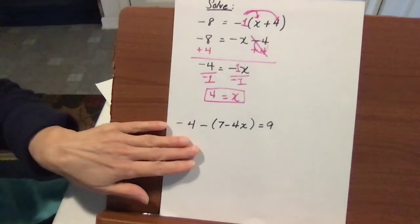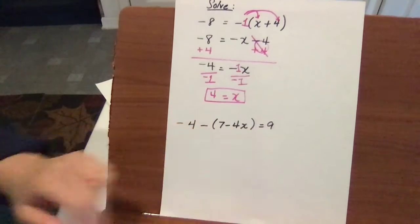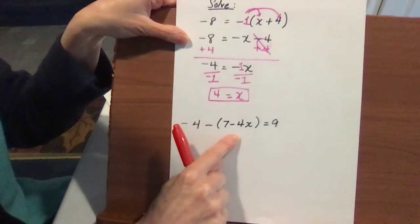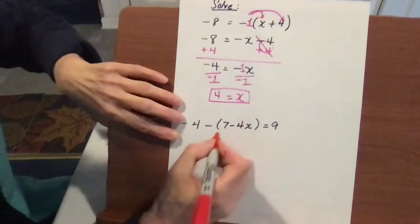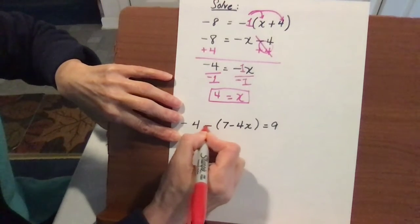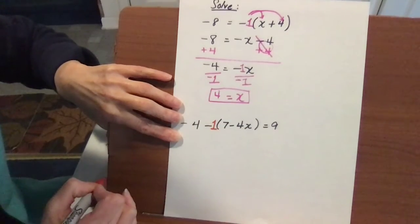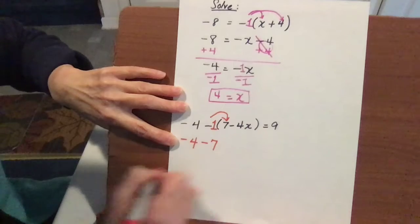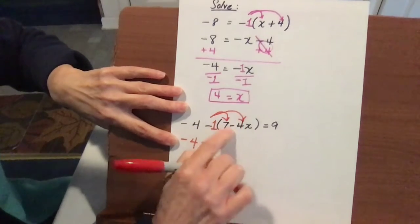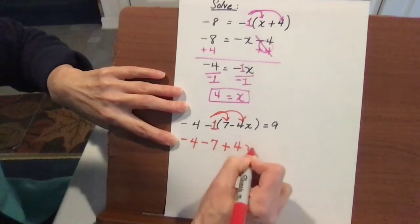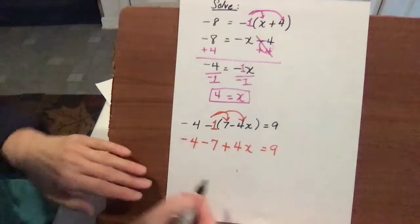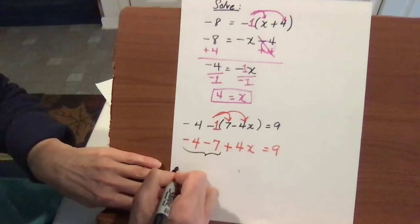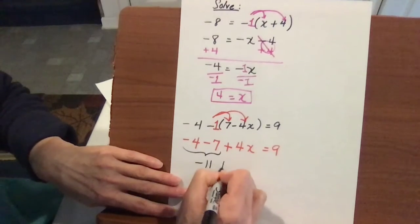In this problem: negative 4 minus a quantity of 7 minus 4x equals 9. The negative minus sign in front of the parentheses means there's a negative 1 there. Negative 4 stays. Negative 1 times 7 is negative 7. Negative 1 times negative 4x becomes plus 4x, equals 9. Combine the numerical like terms: negative 4 minus 7 is negative 11, so negative 11 plus 4x equals 9.